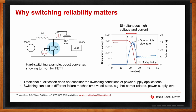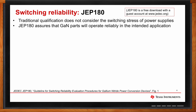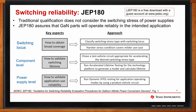You can get hot carrier effects and other power supply level effects which are different. So how does the GaN industry assure that the parts are reliable when switching? That was a big focus of the JC-70 committee. The industry developed a guideline for switching reliability called JEP-180 — Guideline for Switching Reliability Evaluation Procedures, Gallium Nitride Power Conversion Devices — and it's a free download from the JEDEC website. Figure one from JEP-180 shows the key aspects: how to obtain broad coverage, how to validate switching lifetime, and how to validate application use reliability. These three aspects are covered by the use of the switching locus to describe the switching stress. The switching lifetime is covered at the component level; the application use reliability is covered at the power supply level.